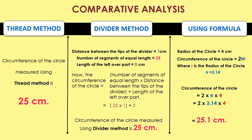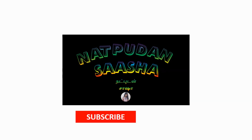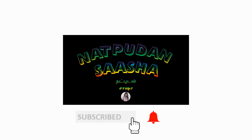Thus the circumference of the circle of radius 4 cm is measured by using thread and divider method and verified the same by using formula. Thank you for watching my video. Please like, share and subscribe to my channel. Also leave your comments below. I will meet you in the next video.